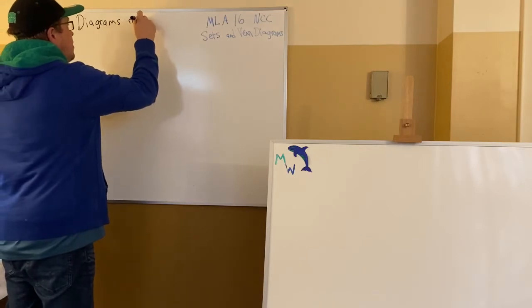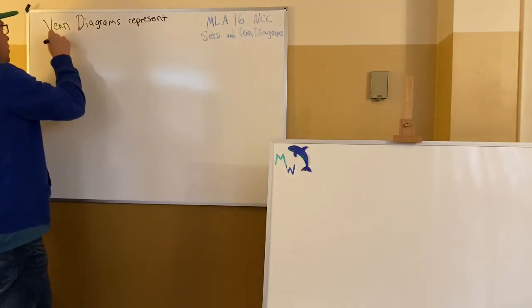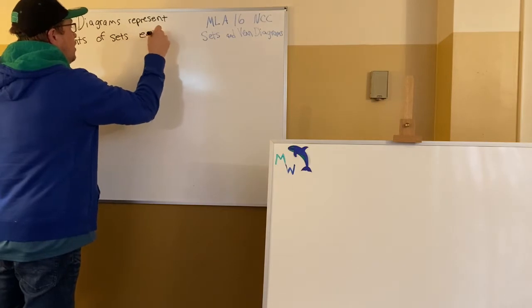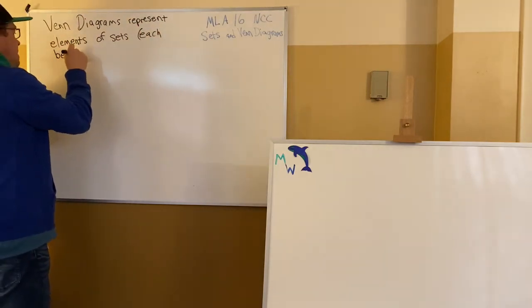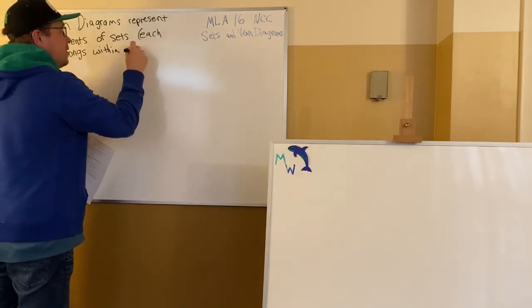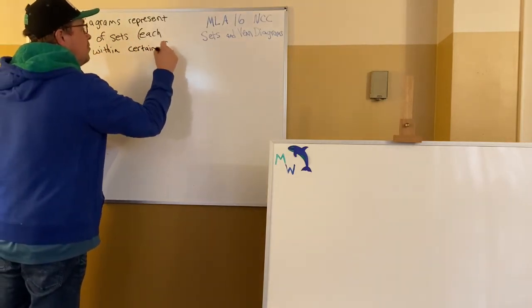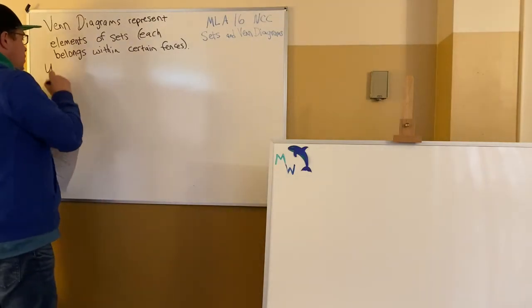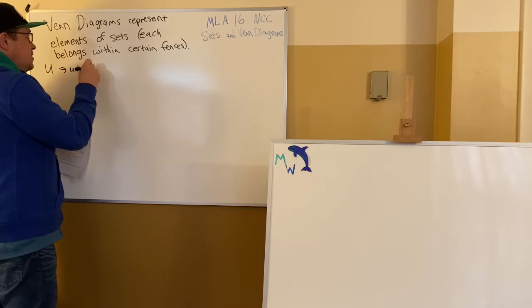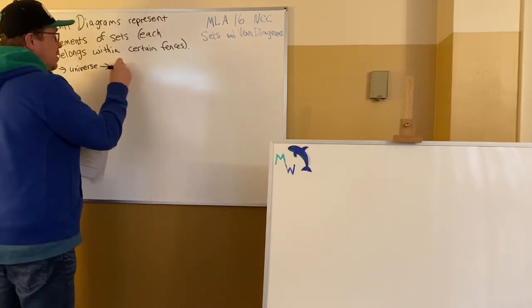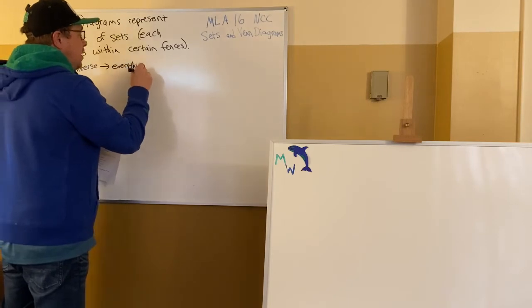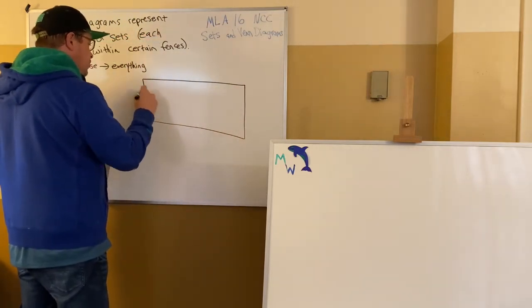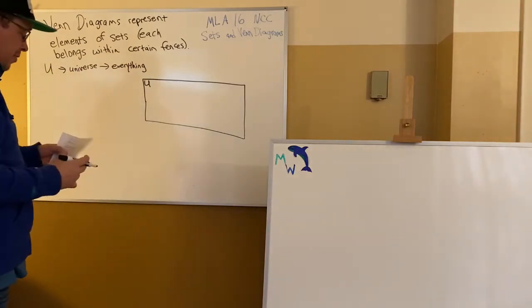Venn diagrams represent elements. Elements are portions or parts of a set, each belonging within certain fences. If you think of them as fences and you're taking this picture from above, then everyone is in some fences and maybe outside some fences or whatever. U, the letter U, will represent the universe. That's kind of the piece of paper, which is everything. And it would be outside any of the circles I'm about to draw. That whole piece of paper, if you're on that piece of paper, you're in our universe.